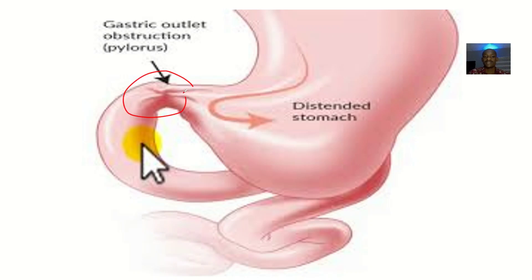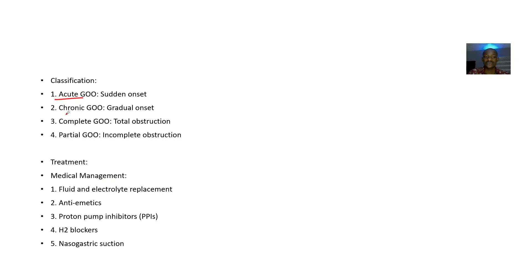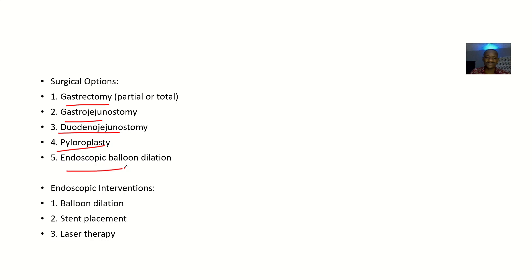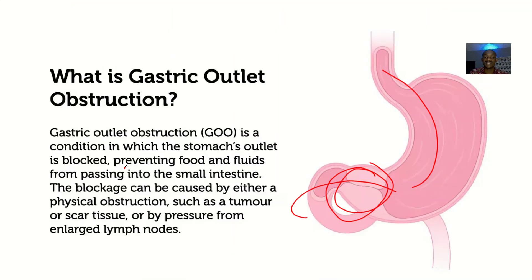Gastric outlet obstruction is classified as acute or chronic, and as complete or partial obstruction. Treatment includes fluid and electrolyte replacement, antiemetics, proton pump inhibitors, H2 blockers, and nasogastric suction. Surgical options include partial or total gastrectomy, gastrojejunostomy, duodenojejunostomy, pyluroplasty, and endoscopic balloon dilatation.